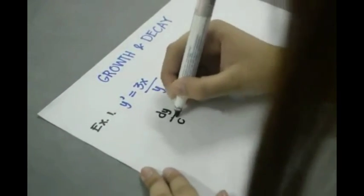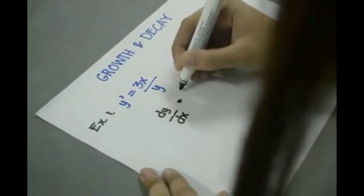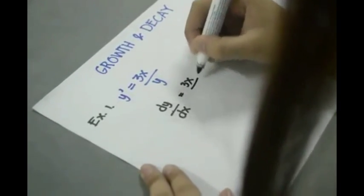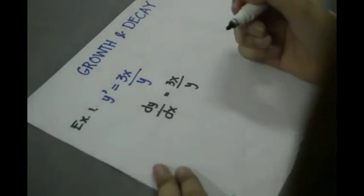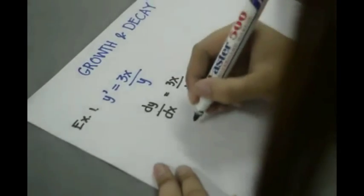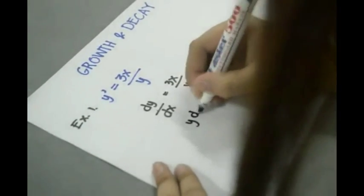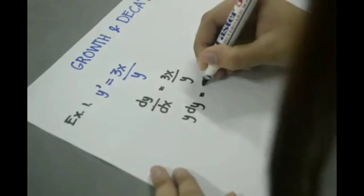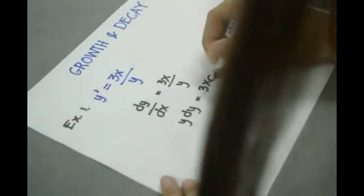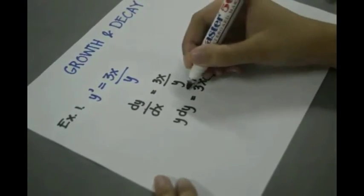To solve this, dy over dx is equal to 3x over y. We will cross-multiply: y dy is equal to 3x dx. Then we will integrate.